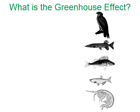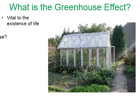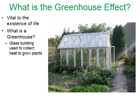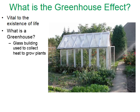Let's begin with what is the greenhouse effect. First of all, the greenhouse effect is incredibly vital to the existence of life on Earth. A greenhouse is a glass building used to trap heat to grow plants in cooler areas. In the picture here we have a greenhouse — it's trapping heat to keep the plants inside nice and warm.